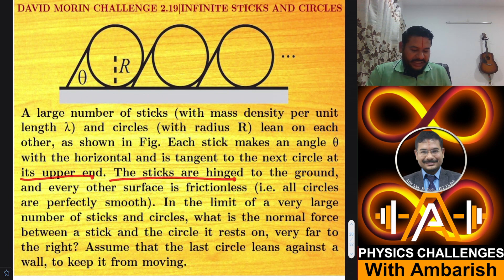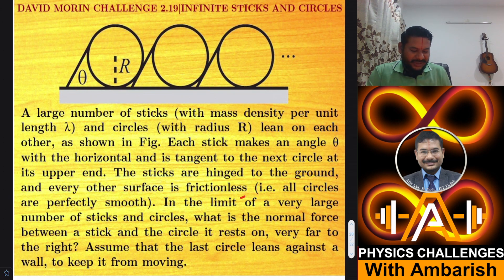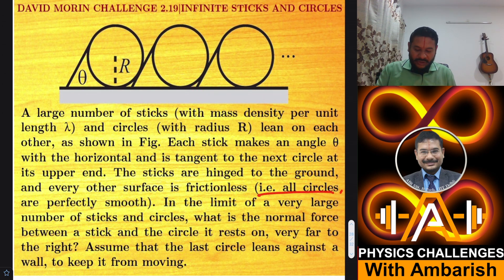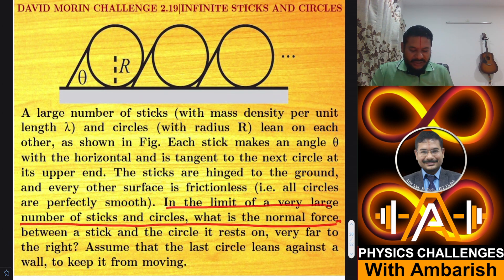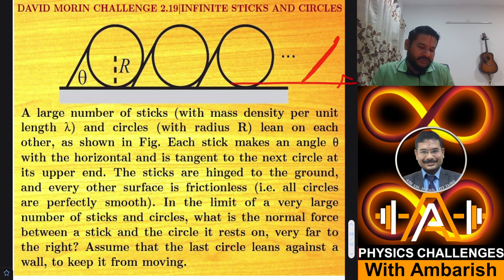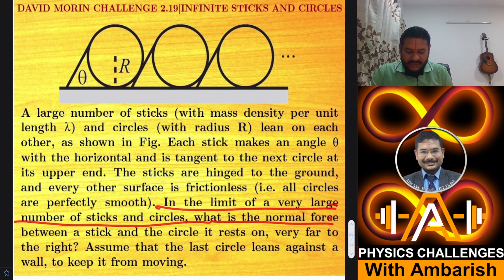The sticks are hinged to the ground and every other surface is frictionless — meaning every surface is frictionless except for the hinges; all circles are perfectly smooth. In the limit of a very large number of sticks and circles, what is the normal force between a stick and the circle it rests on? We want to find this normal reaction when n is very large.